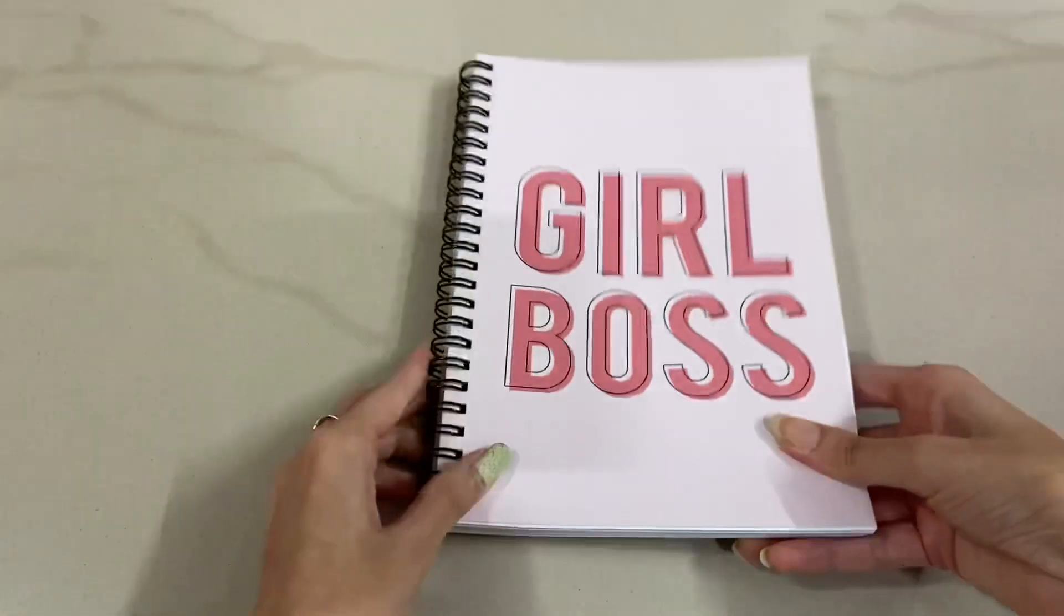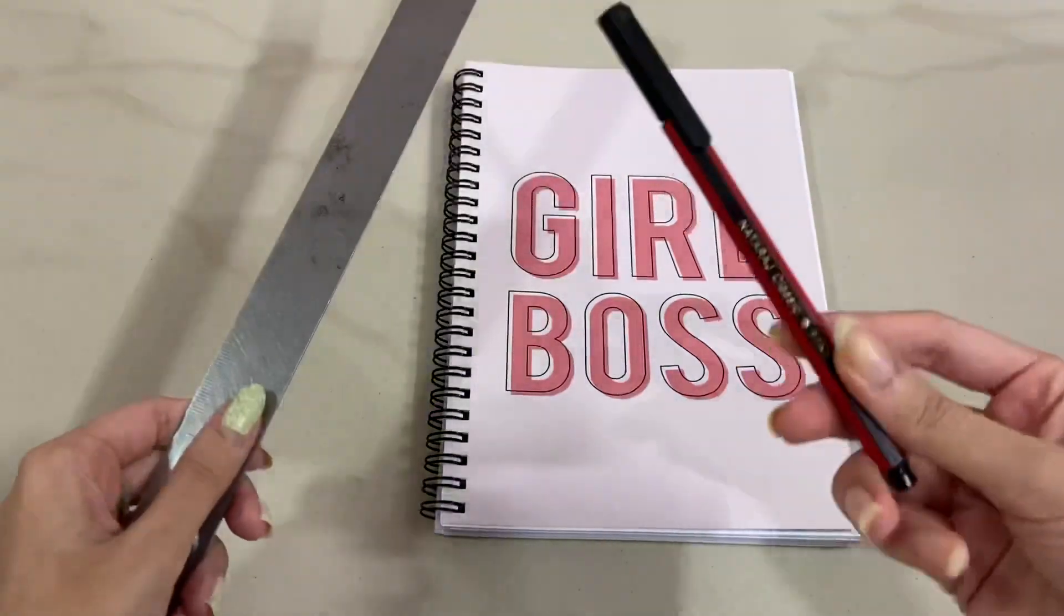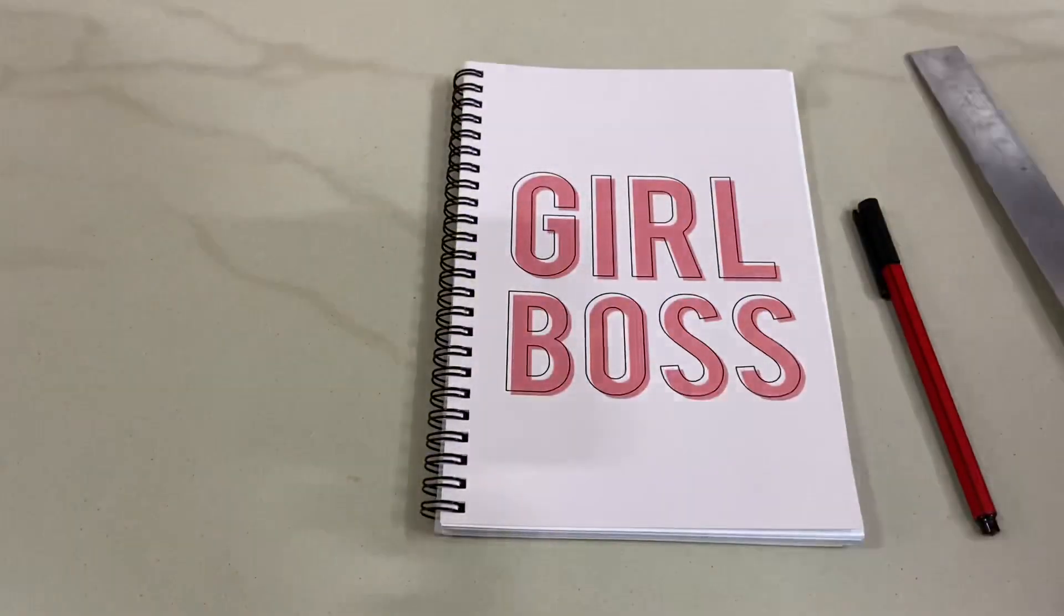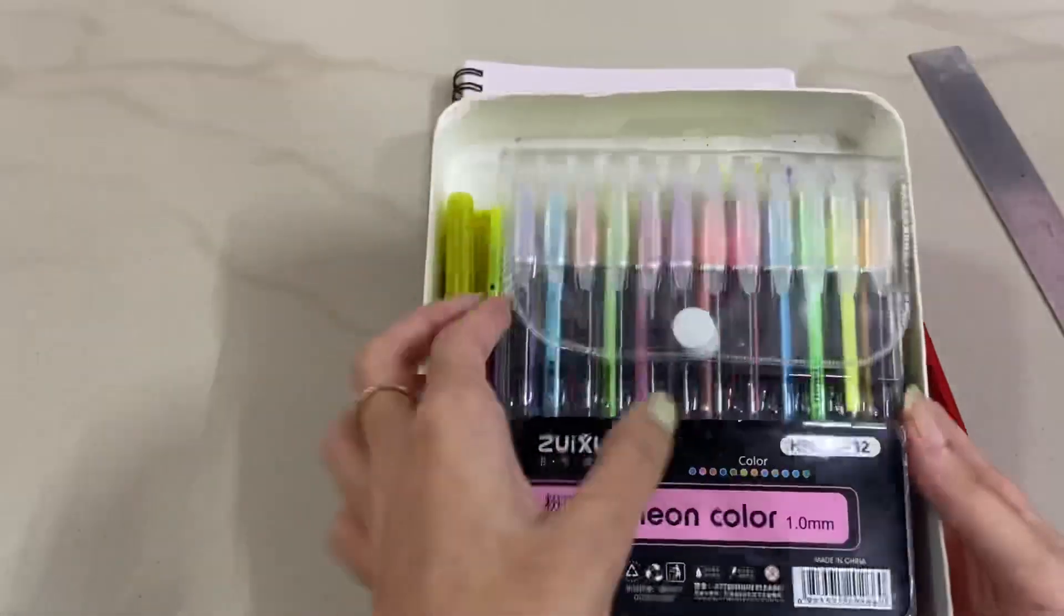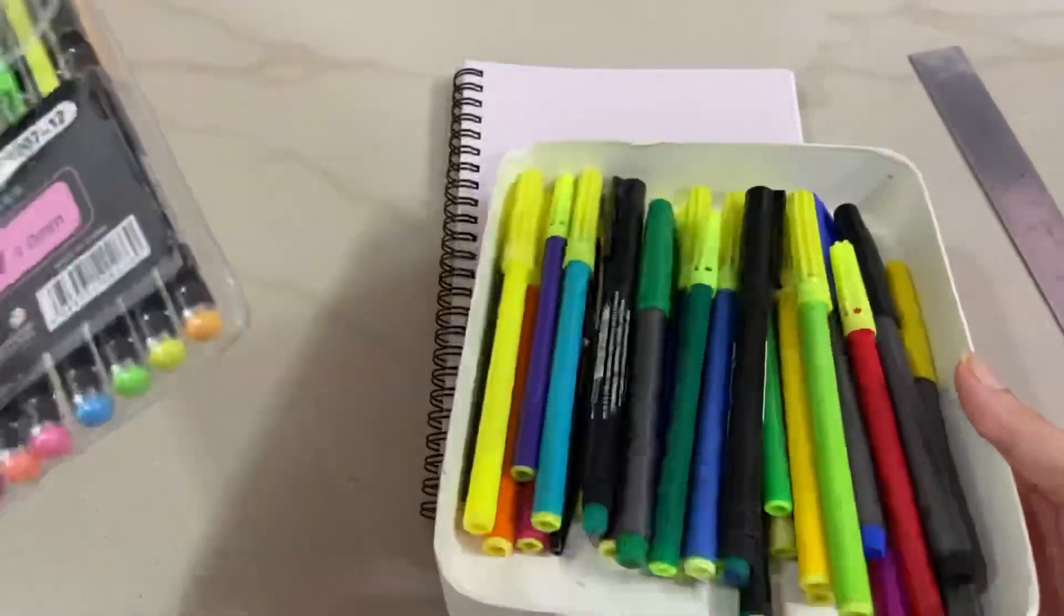So this is the book which I will be using to make my own journal. Then I will need a scale, a black pen, and a few sketch pens and some color pens just to make it a little decorative.